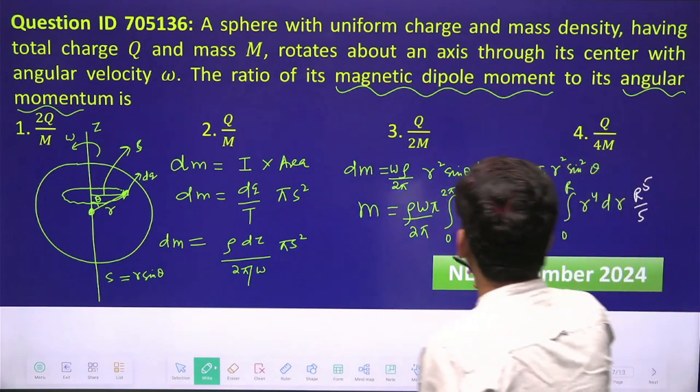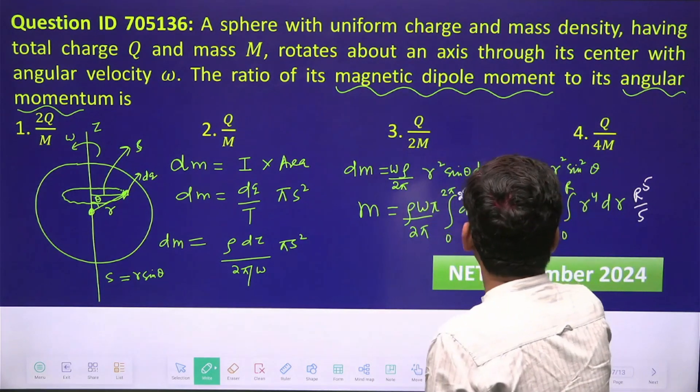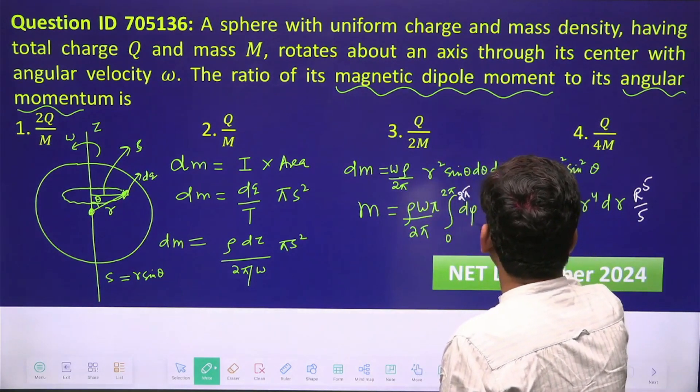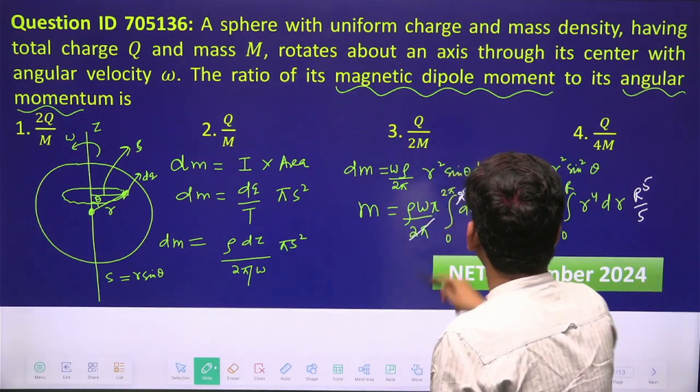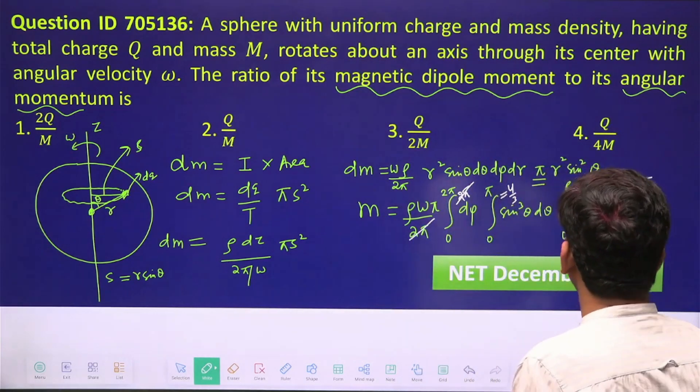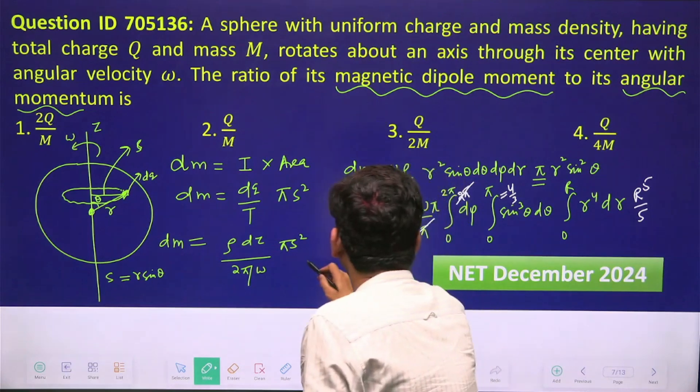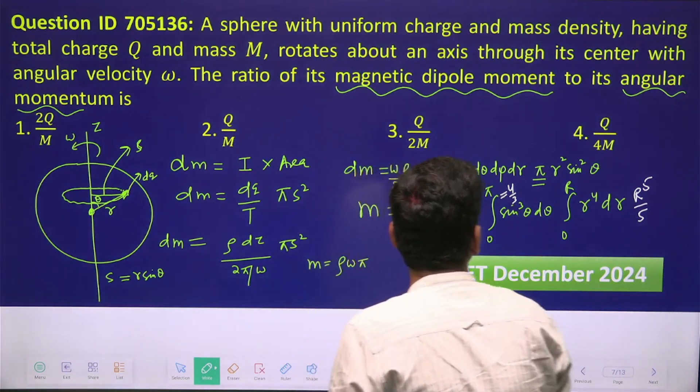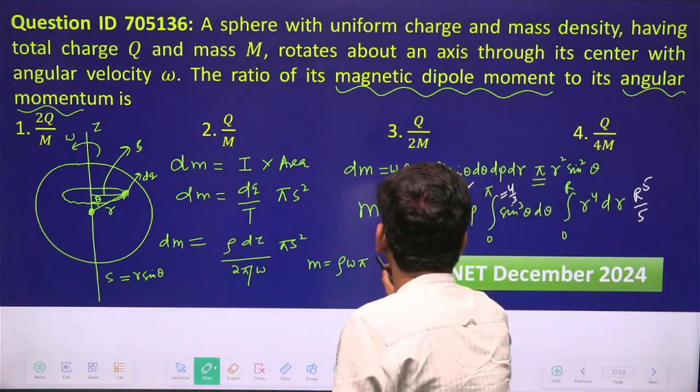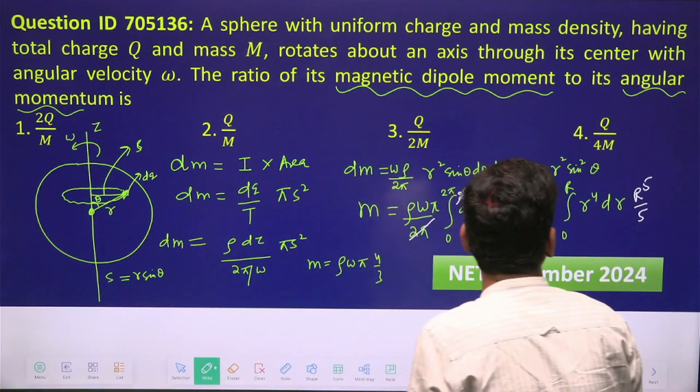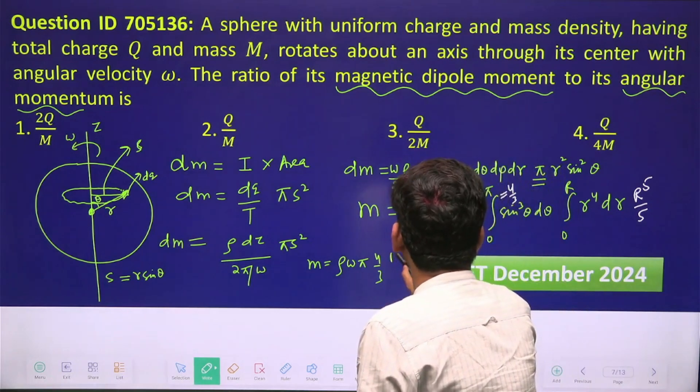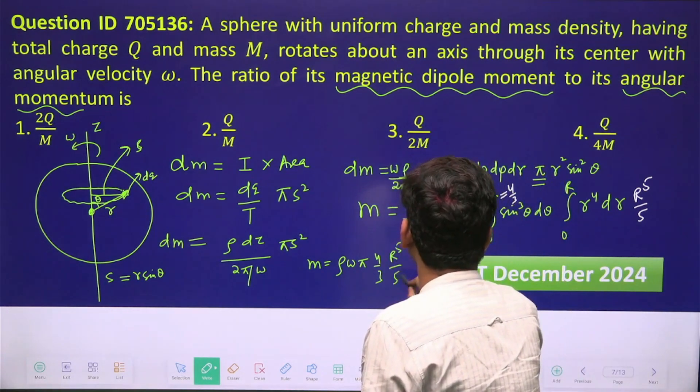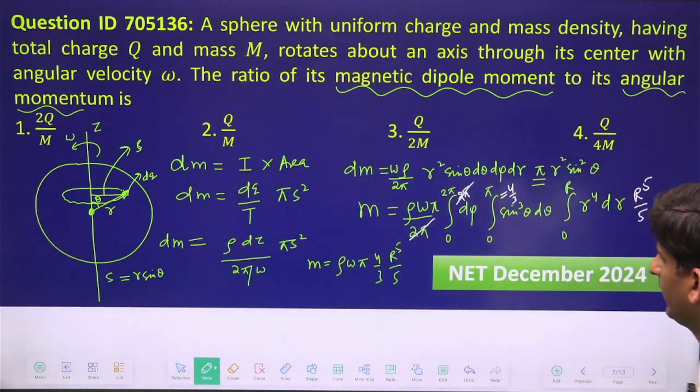So now this 2π and this 2π and this 2π will cancel. Let us check out: m will become ρ ω π × 4/3 × r⁵/5.